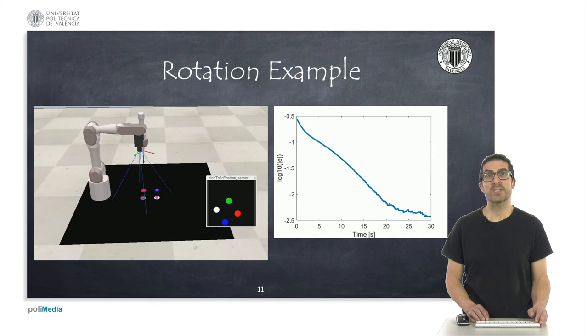In this first example, we are going to see a case in which the robot must perform a rotation of the last joint. This is a 125 degree rotation with respect to the reference configuration, which is quite a lot.